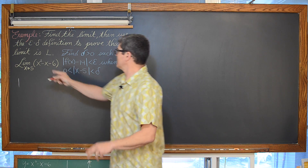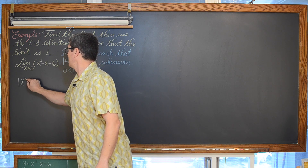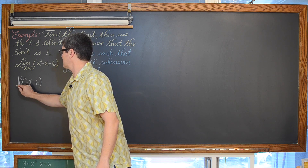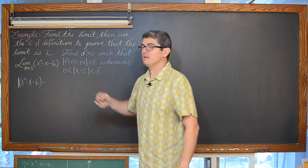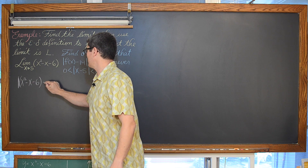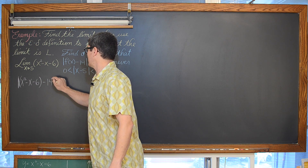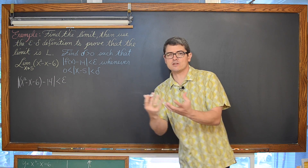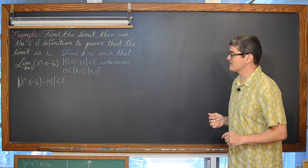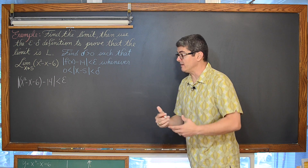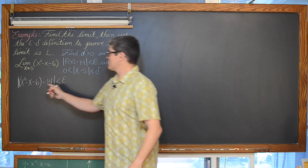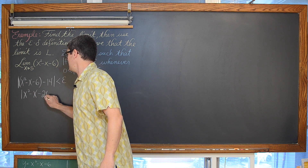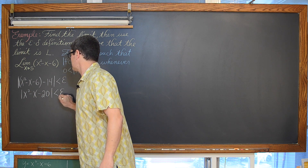The absolute value of our function x squared minus x minus 6, minus the limit we found to be 14. Combining like terms, we have the absolute value of x squared minus x minus 20 is less than epsilon. We are really trying to prove that in the end.